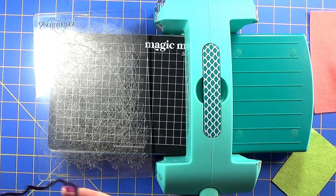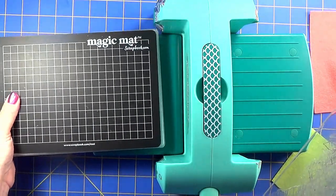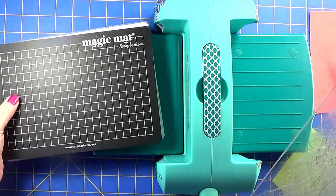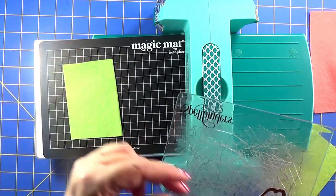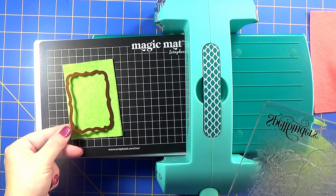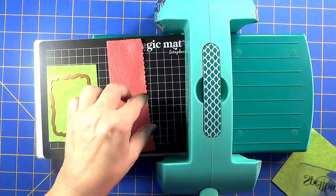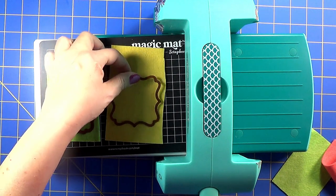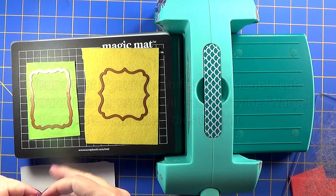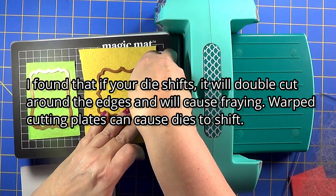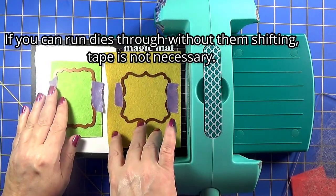What I'm using, this is a Spellbinders that's similar to a Platinum 6, it's the Jane Davenport model. And I've got the base plate. I've got a scrapbook.com magic mat, which is kind of like a cutting mat. It's wonderful. I'll put down my felt. Let's see, this one is getting this shape.